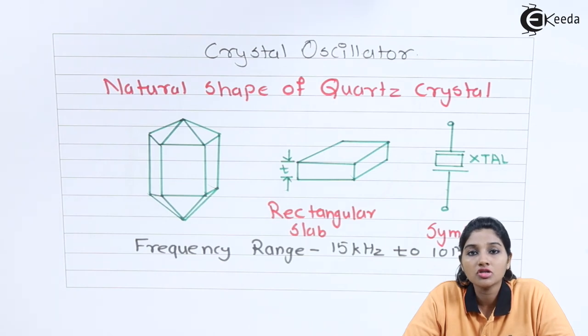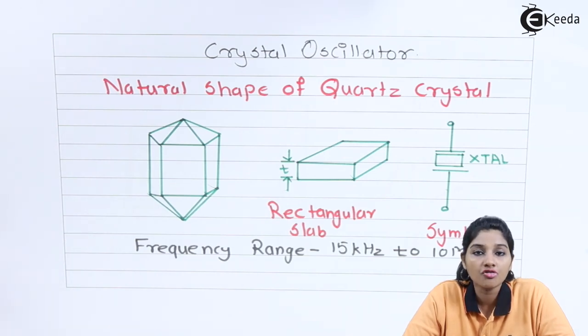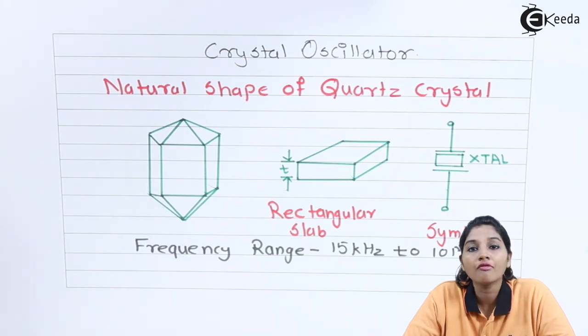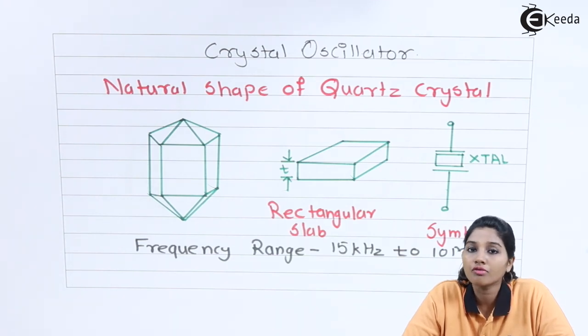They are used in applications such as communication transmitters, digital clocks, and watches. These are basically applications where frequency stability and accuracy of the output is important.